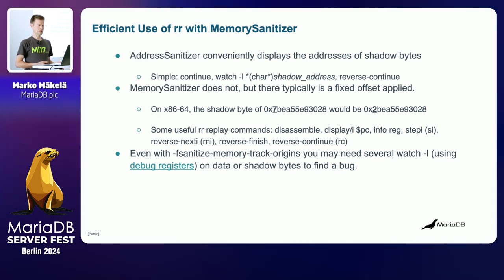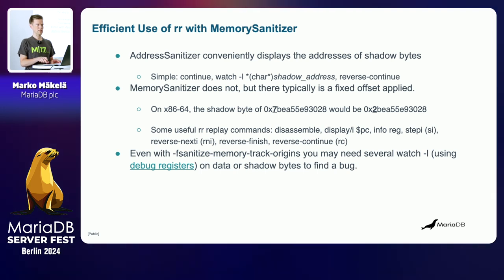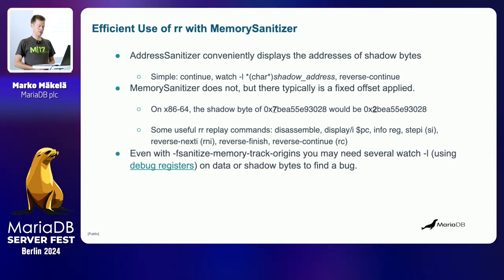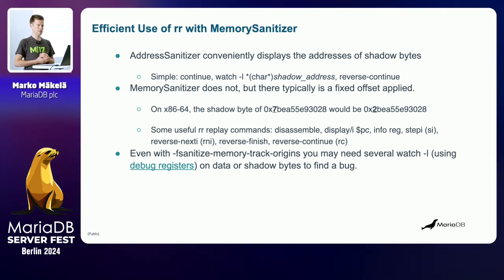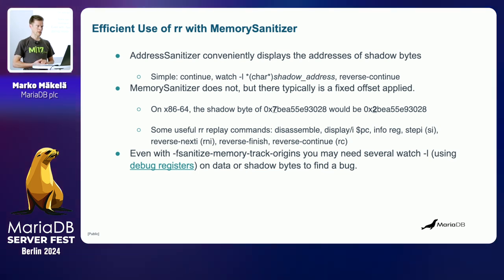With address sanitizer things are fairly simple because the output contains the exact addresses of the address sanitizer shadow bytes — for each eight application bytes you have one shadow byte saying which bytes are addressable. Debugging is easy: you continue the RR replay trace to the end, set a data watchpoint on the shadow byte address you're interested in, then reverse-continue, and you get to the point where that memory was freed. Then you can see what the crashing thread was doing at that point.